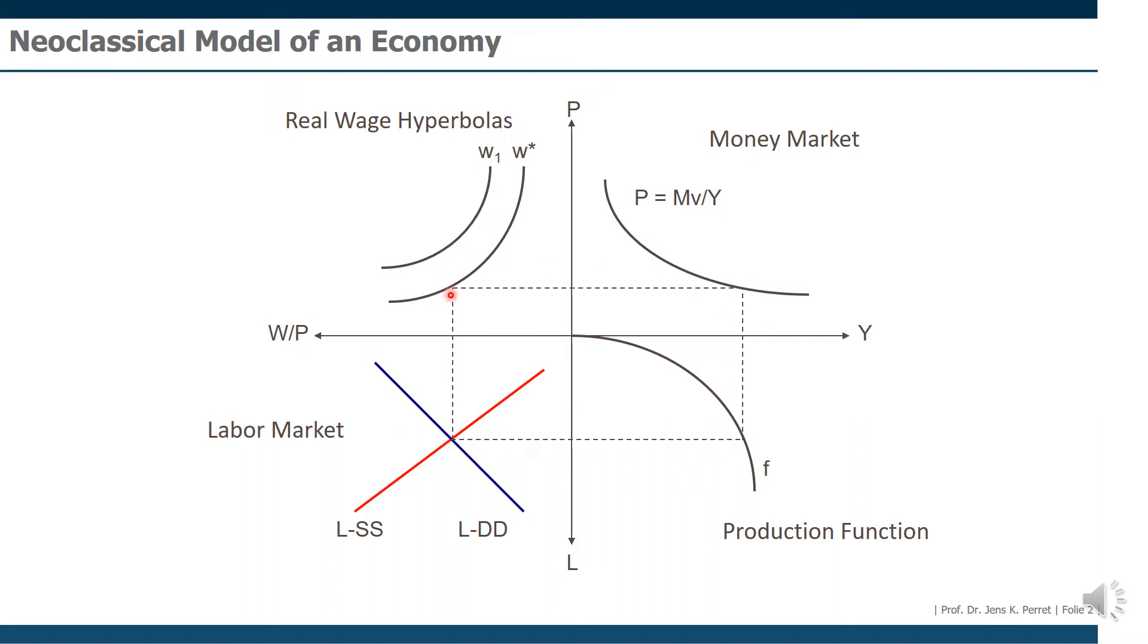And the thing which connects all of this is in the upper left the so-called real wage hyperbolas, which is simply a link between the price level and the real wage rate, which is considered to be the wage which is leading to all decisions from demand and supply side on the labor market. That's the main idea if we want to build this neoclassical model of an economy.